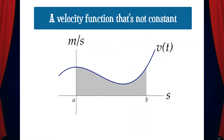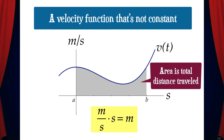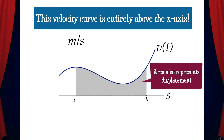Let's continue to look at this idea of distance and displacement, but this time with a velocity function that's not constant over an interval. This velocity function v of t has units of meters per second, meaning the units on the y-axis are meters per second and the units on the x-axis are seconds. If we find the area under this curve by calculating the definite integral, the units would be meters per second times seconds, which equals meters. That gives us the total distance that this object traveled from A to B. Note that this velocity curve is entirely above the x-axis, which means the area under the curve from A to B also represents the displacement of the object from A to B.